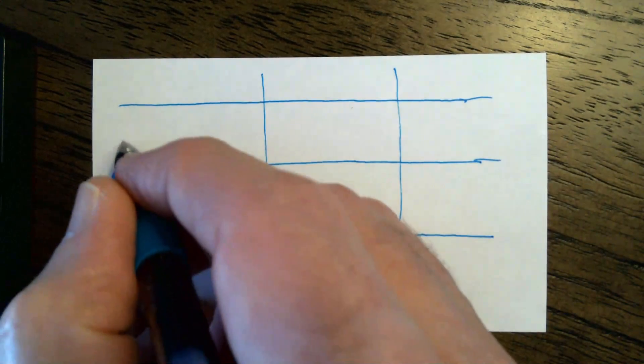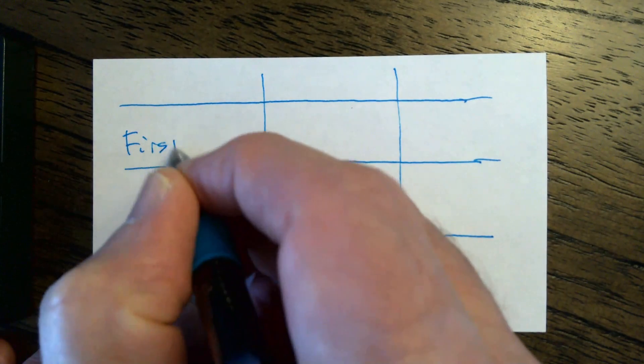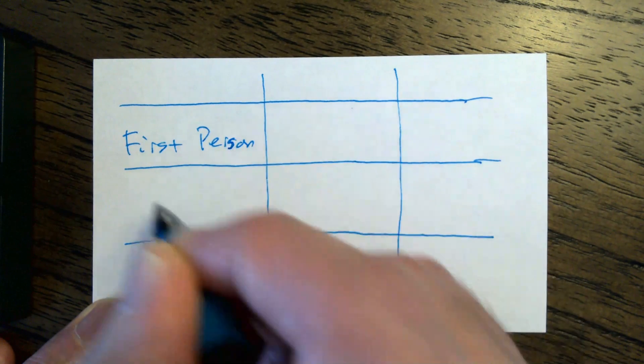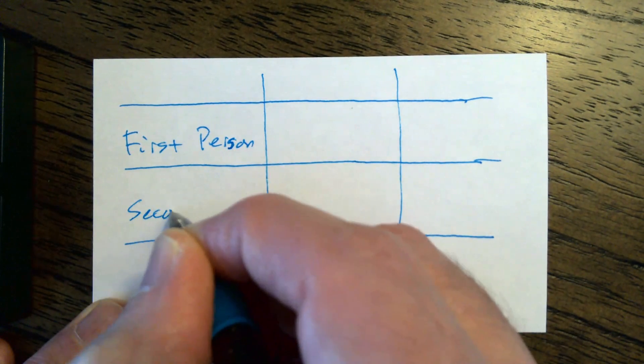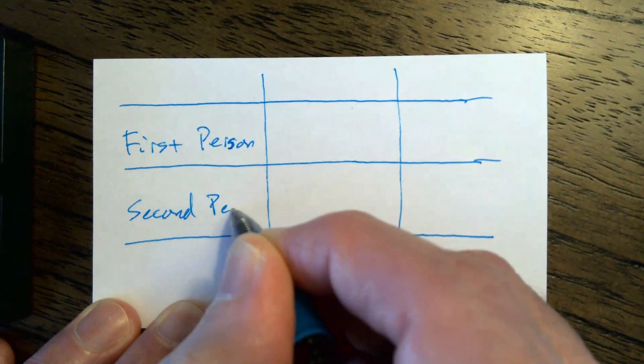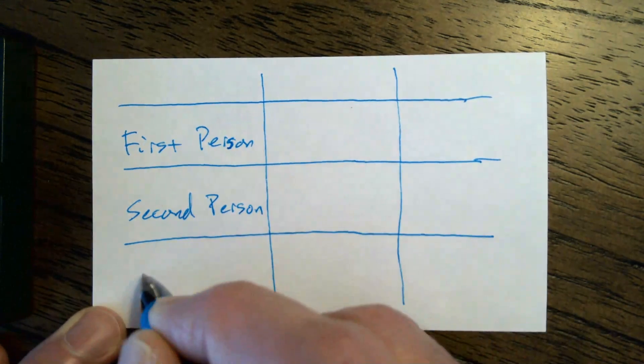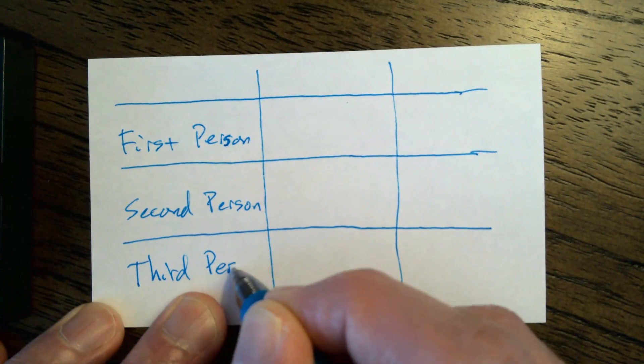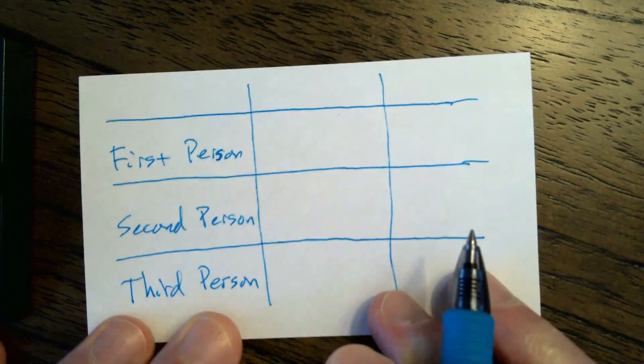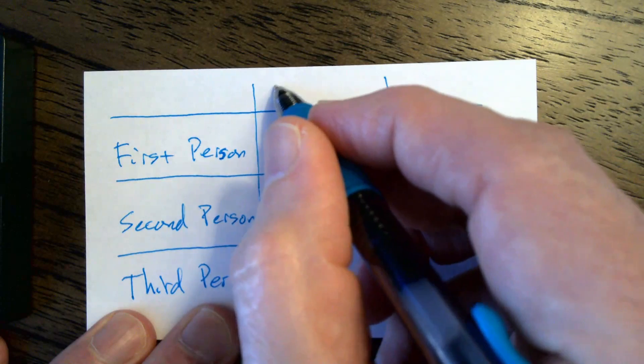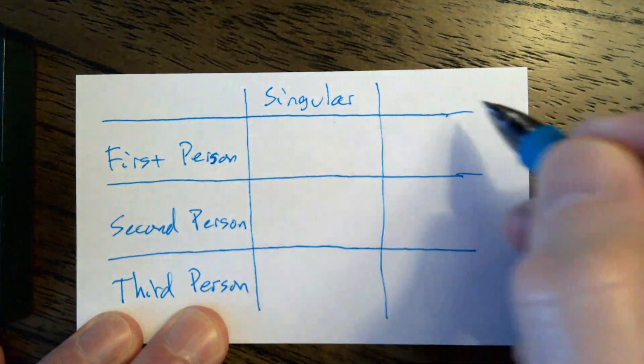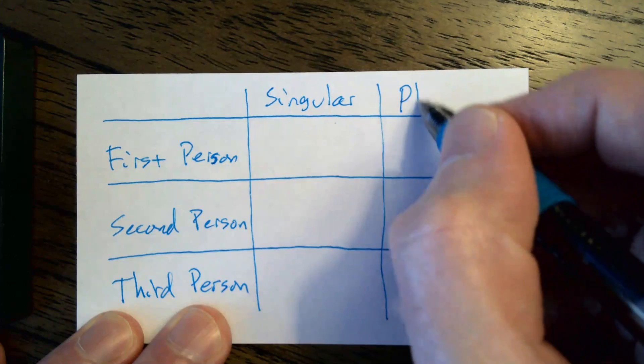And then I write first person, second person, third person, and here I write singular and here I write plural.